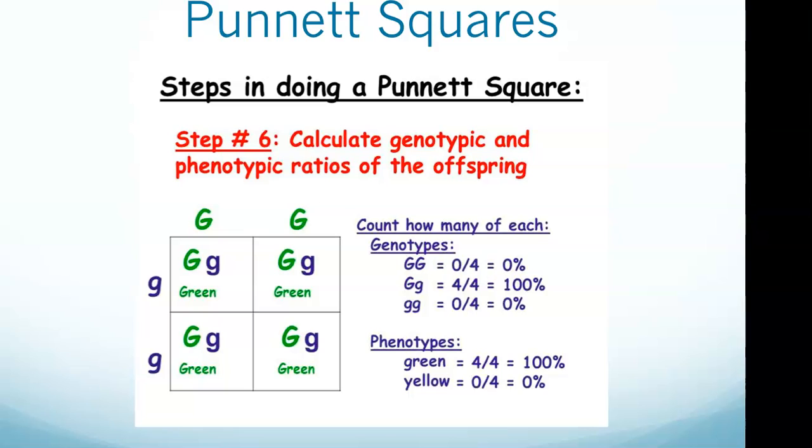So if you fill in a Punnett square, you'll get capital B capital B, so two dominant, capital B lower b, capital B lowercase b, and then two lowercase b's, with the two lowercase b's being recessive. So the likelihood of getting those two recessive b's is one in four, or 25 percent, and that's the chance that you have the blue-eyed child.